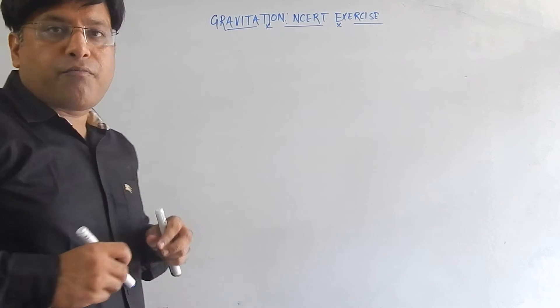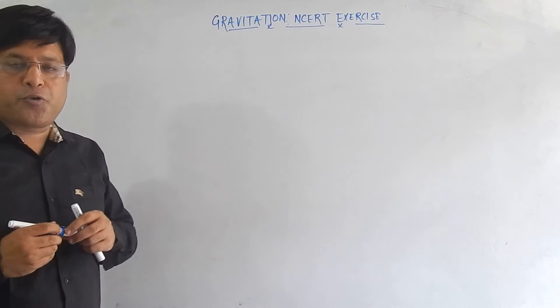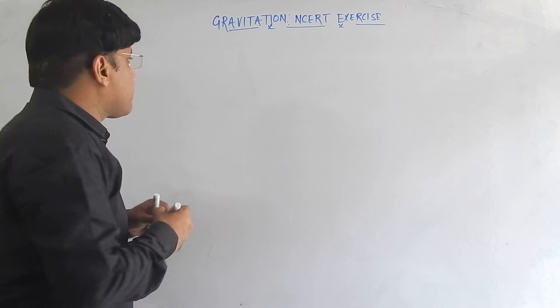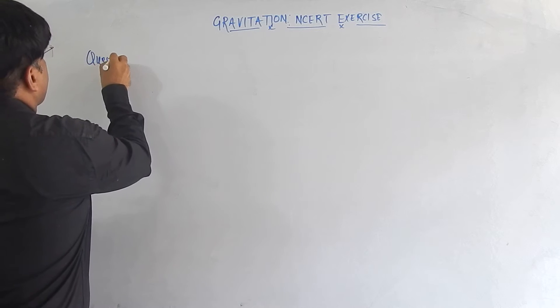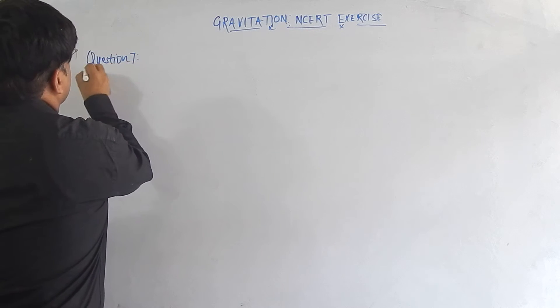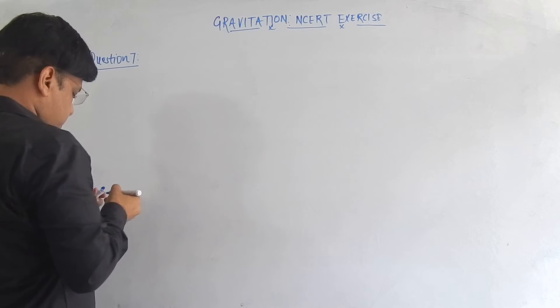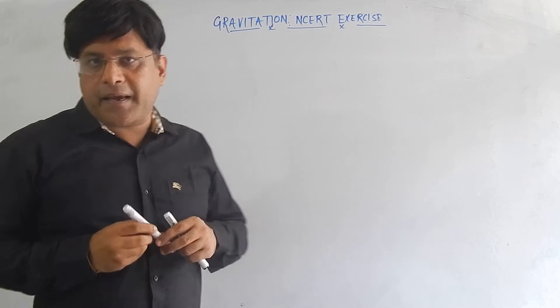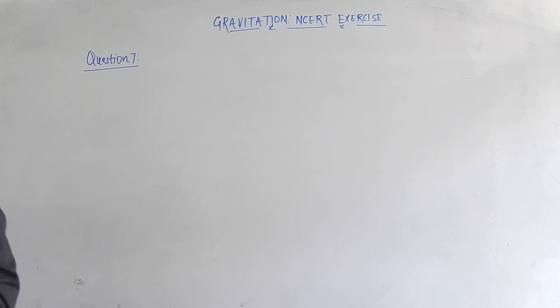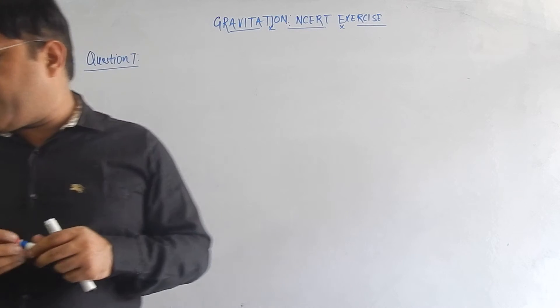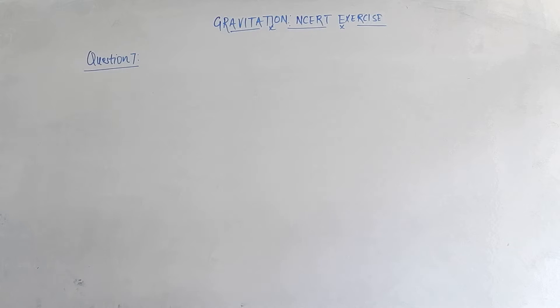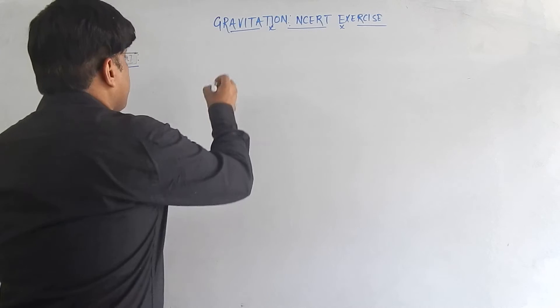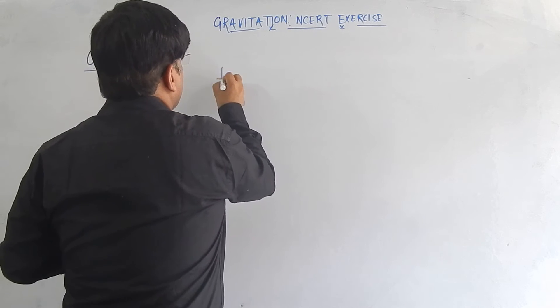So friends, now we are moving towards question number seven of the chapter. What does it say? It talks about the importance of the universal law of gravitation. We have to talk about the importance.